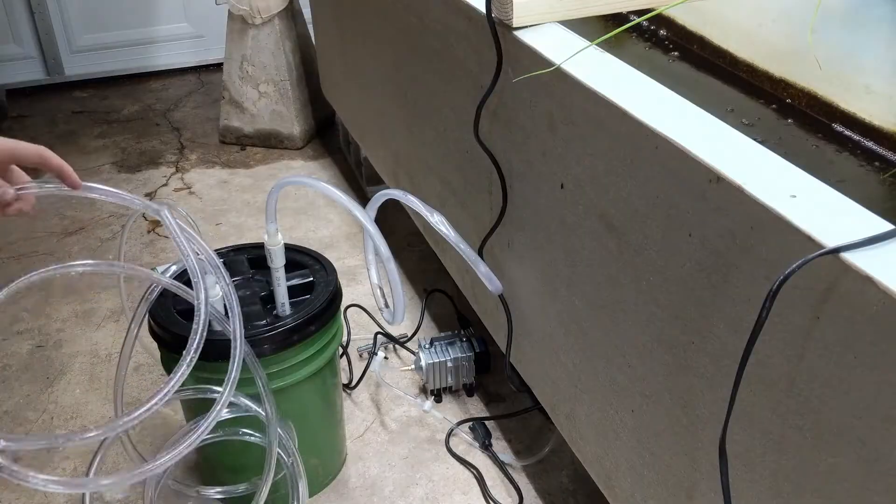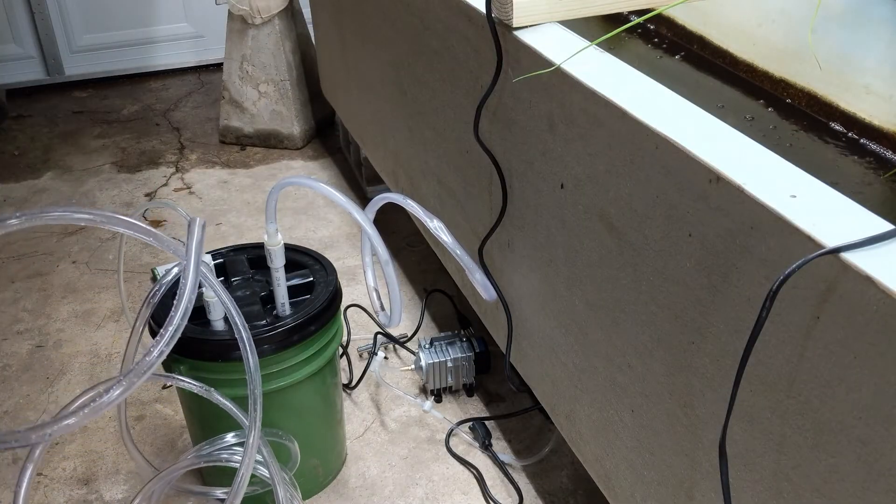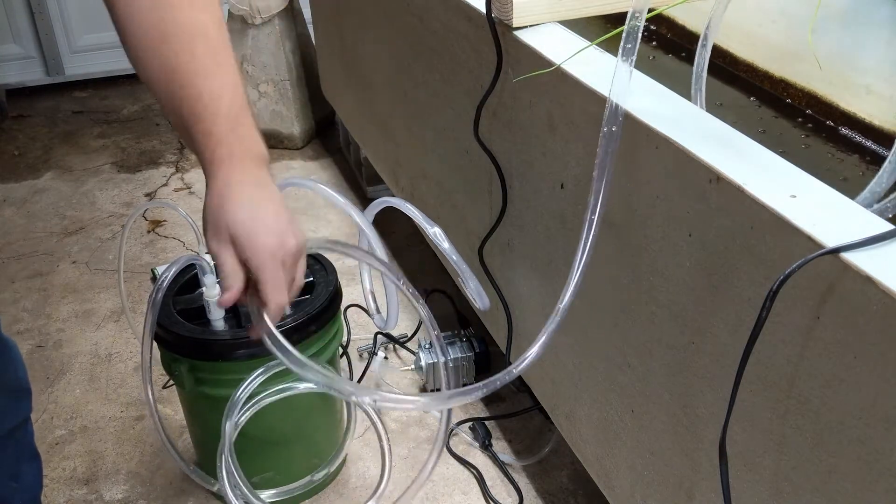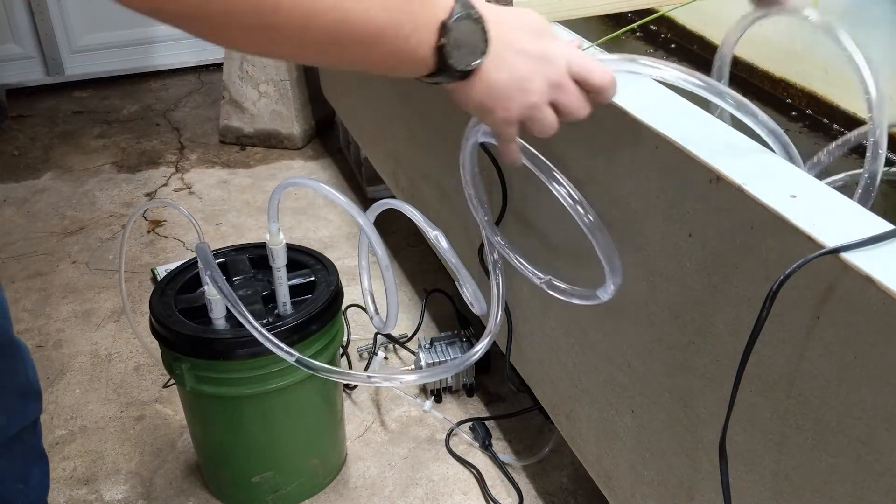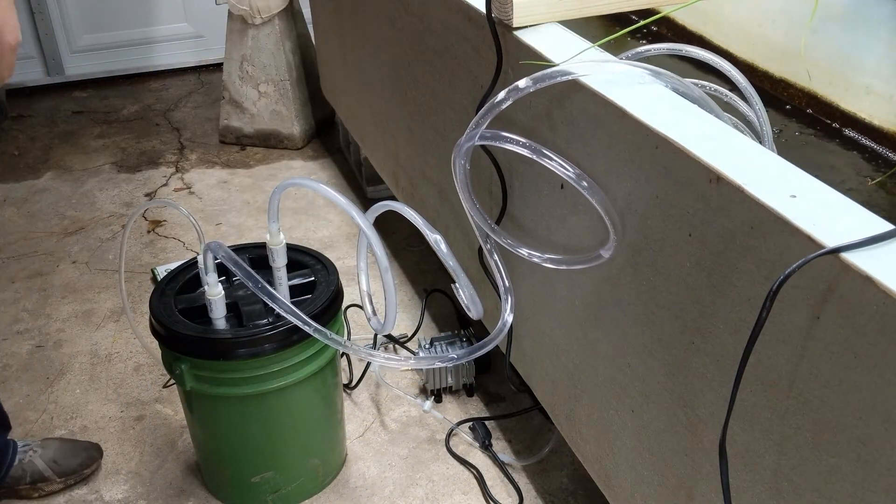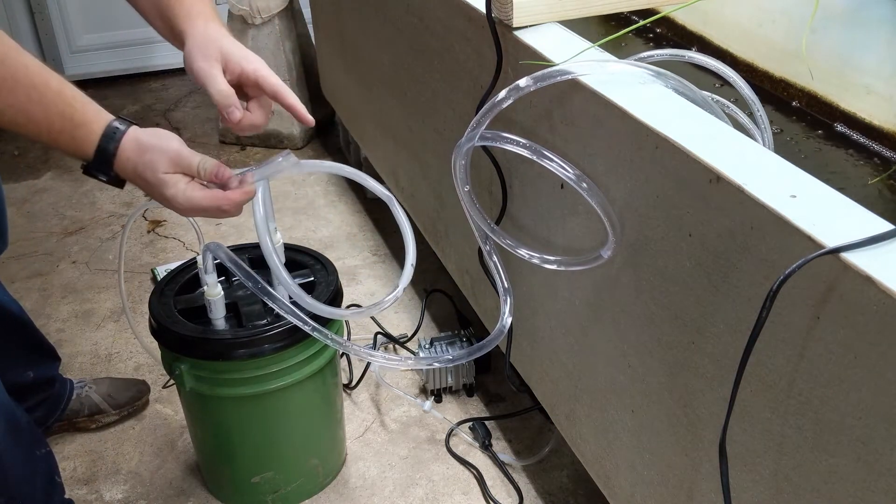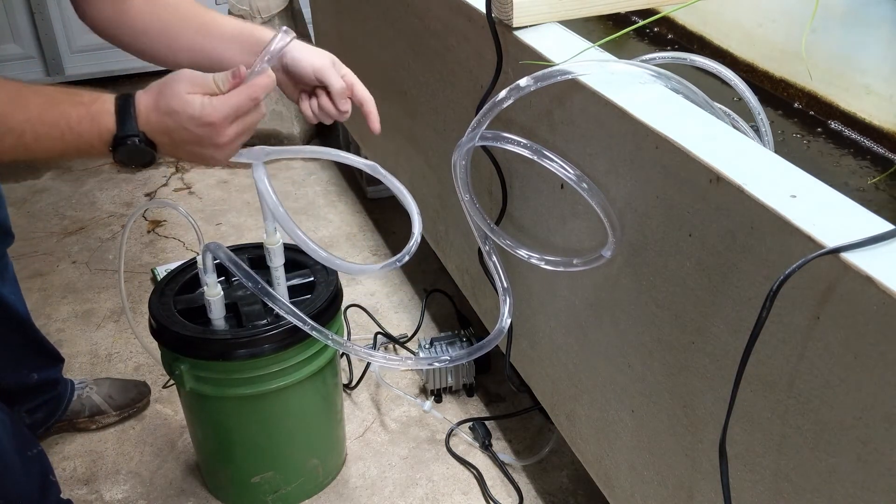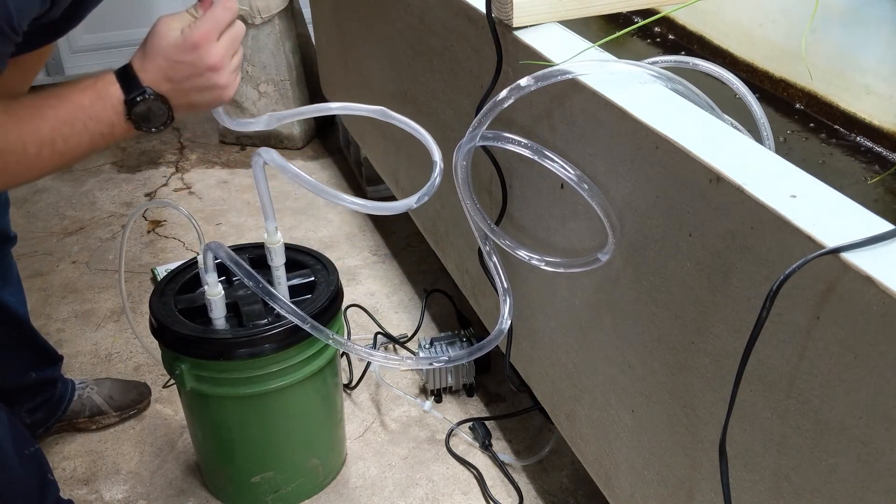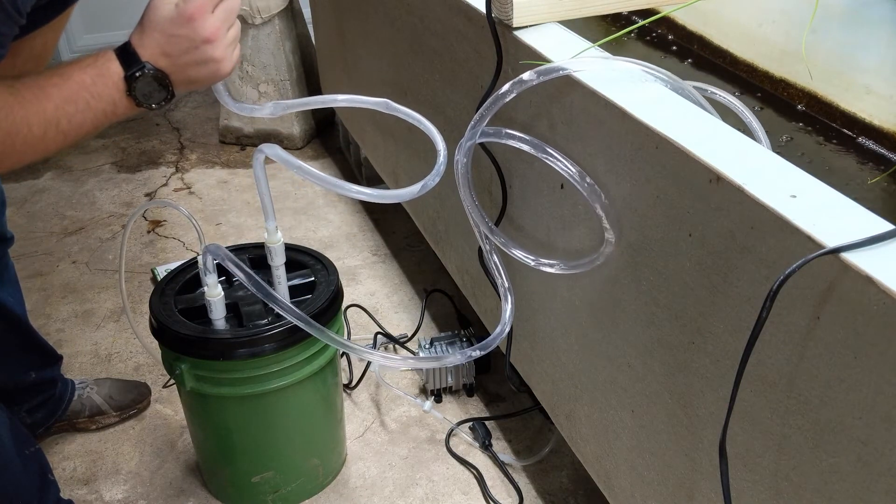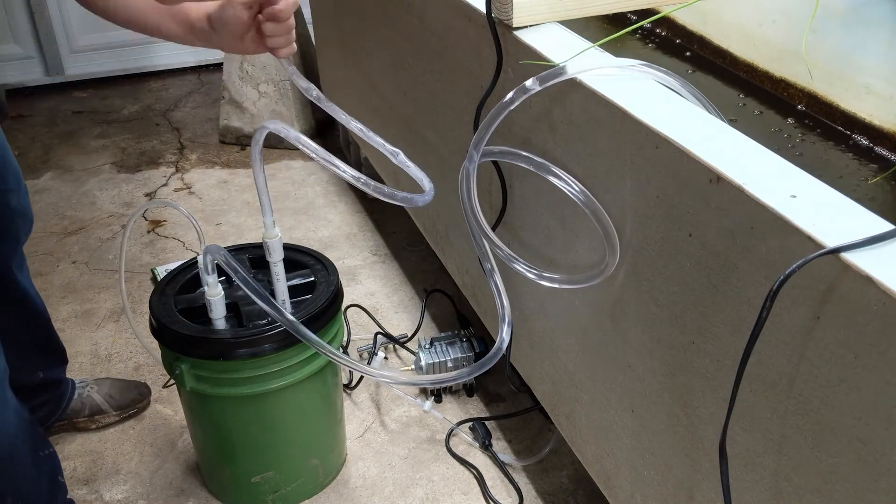So we'll get it all hooked up. This is the inlet hose and we'll go ahead and drop that down in the water. And now we'll grab the outlet hose and what we want to do is go ahead and get a siphon started. So I'll just go ahead and suck the air out of the bucket and it should get the siphon started. It takes me a couple tries so we can speed it up.